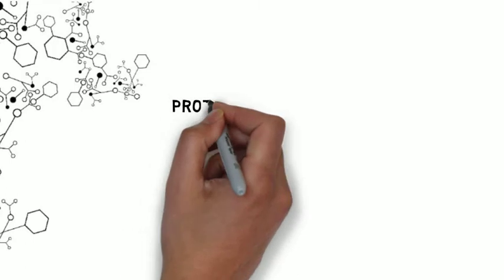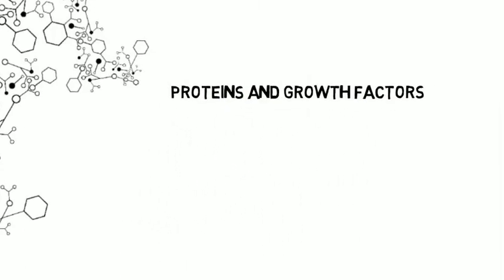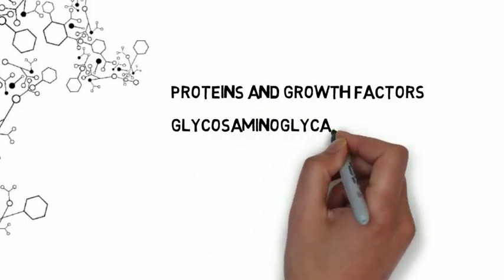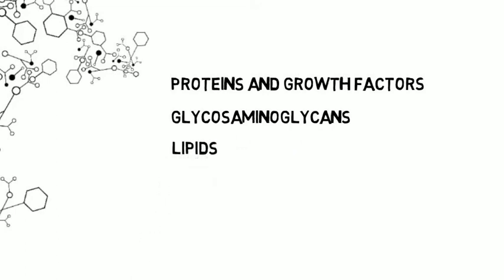Deer antler velvet contains proteins and growth factors which aid tissue growth and cell renewal. There are glycosaminoglycans which build, maintain and repair joint structures. The lipids in deer antler velvet build cell components, enhance cellular activities and repair structural damage.